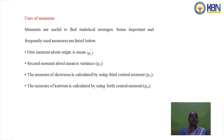Some uses of moments: the first moment about the origin (μ1′) gives the mean, and the second central moment (μ2) gives the variance. The measure of skewness is calculated using the third central moment μ3, and the measure of kurtosis is calculated using the fourth central moment μ4.